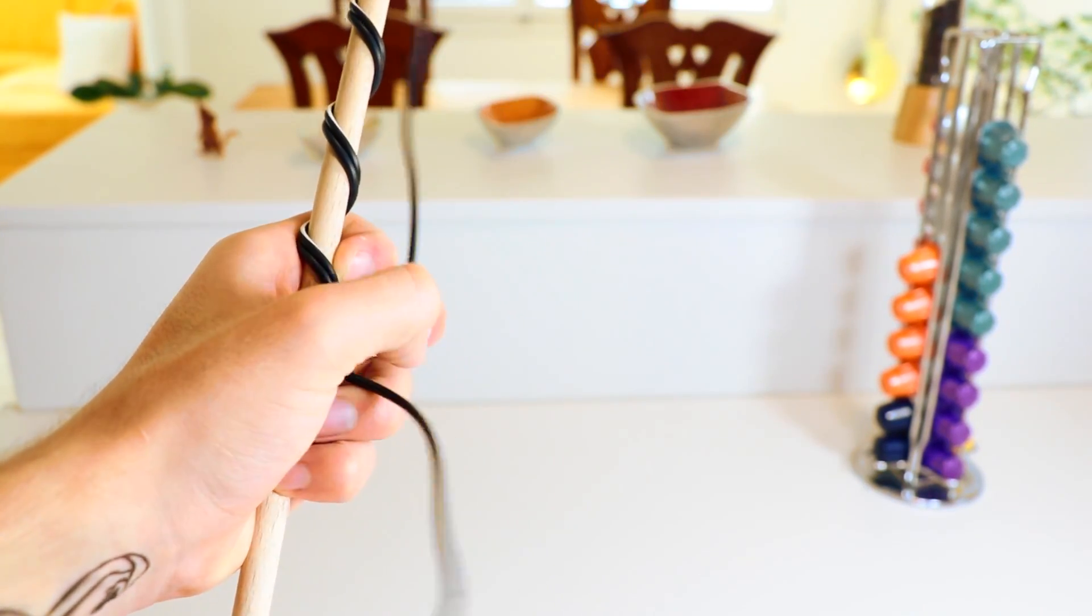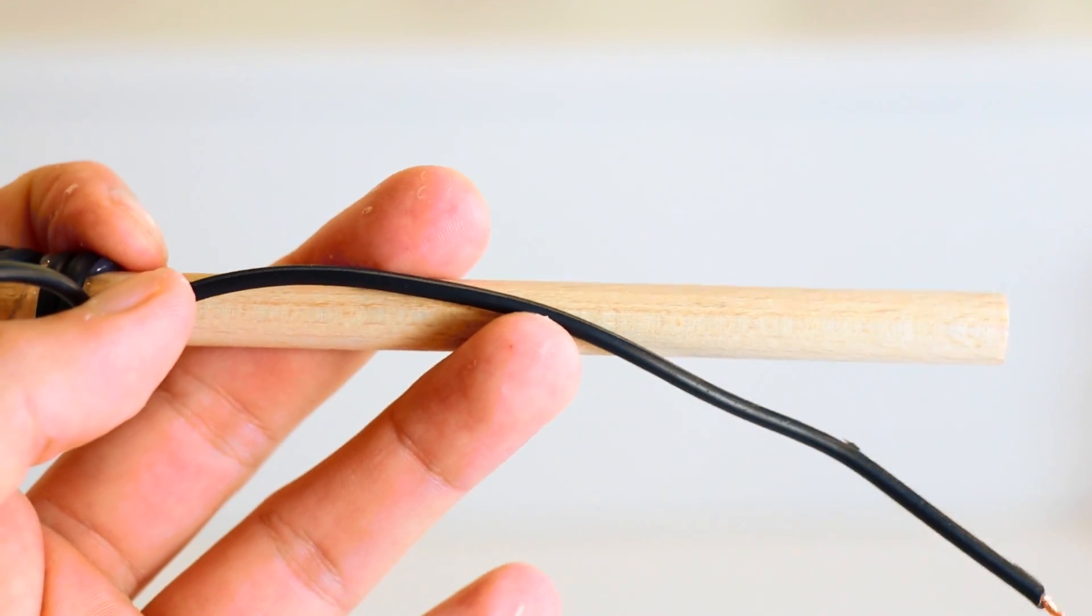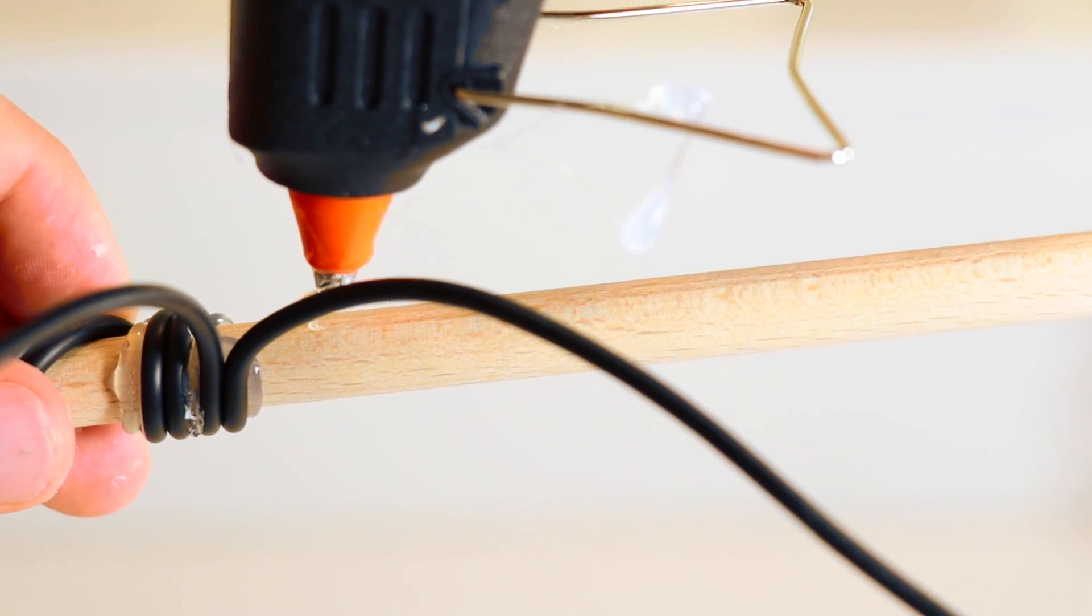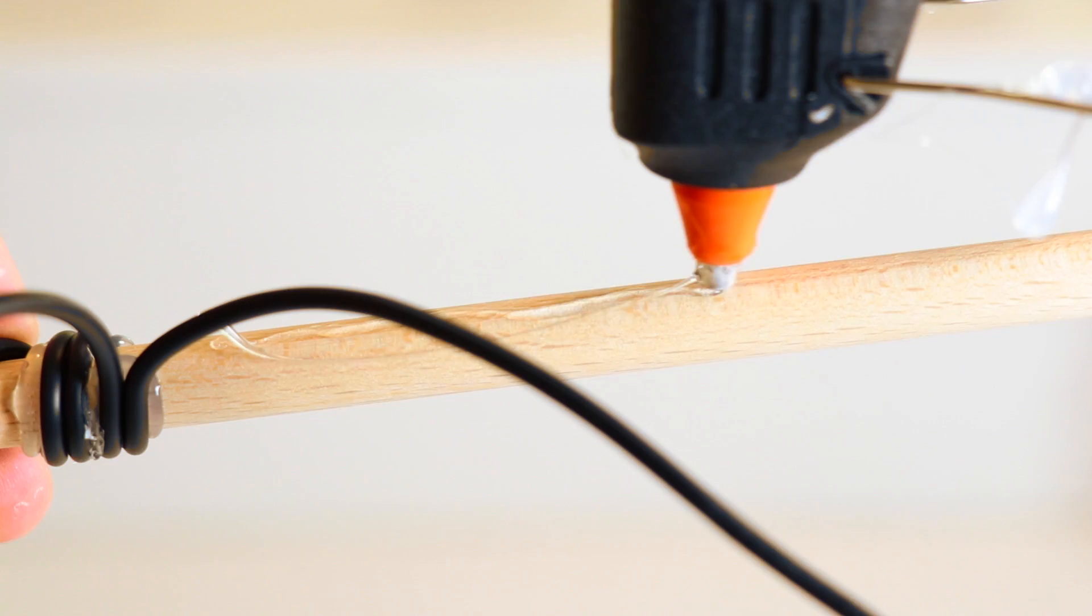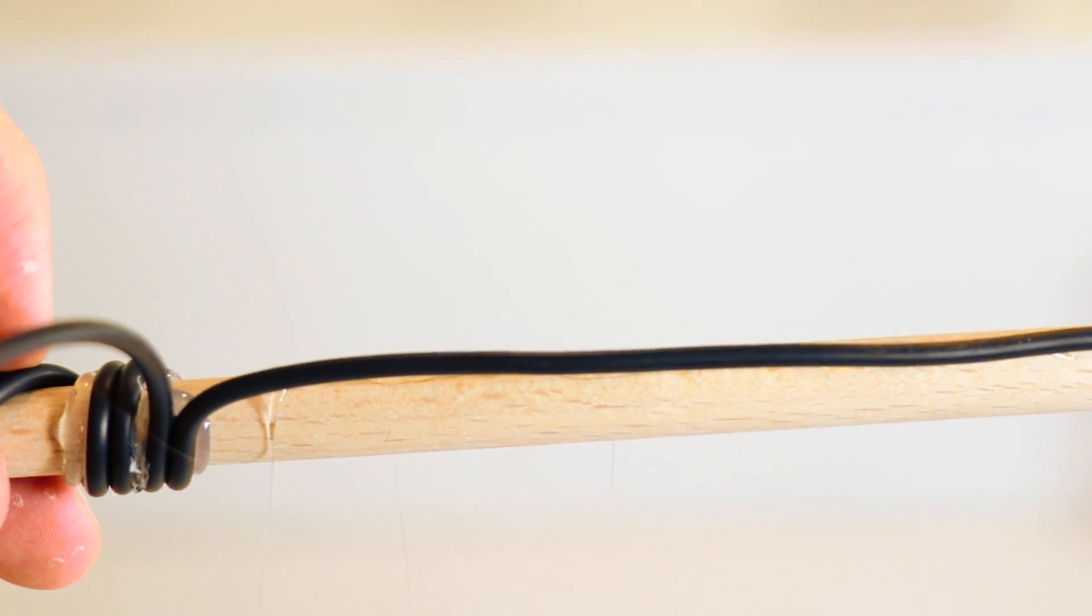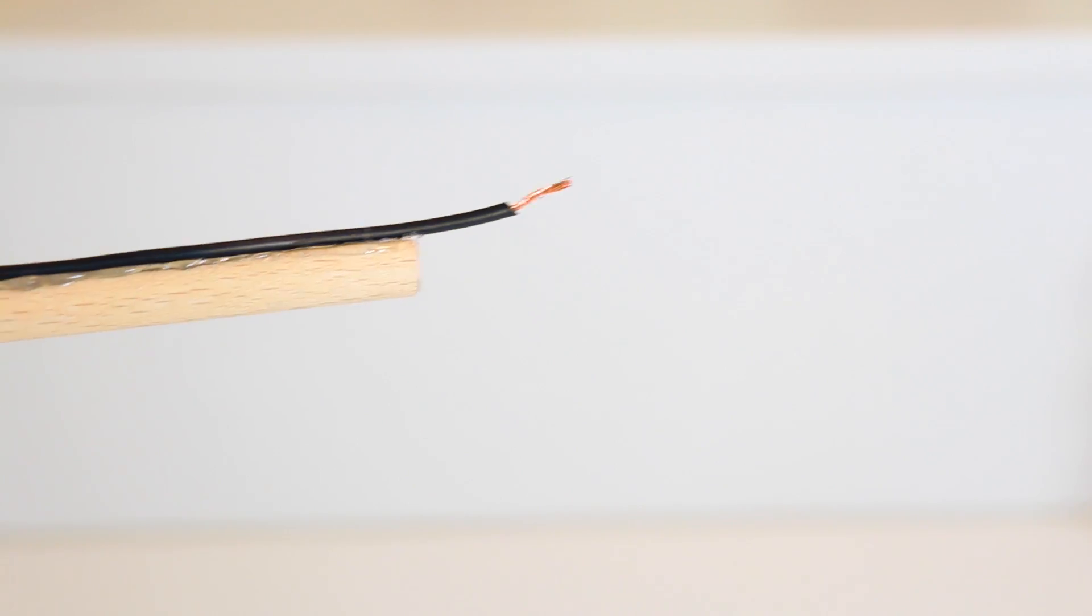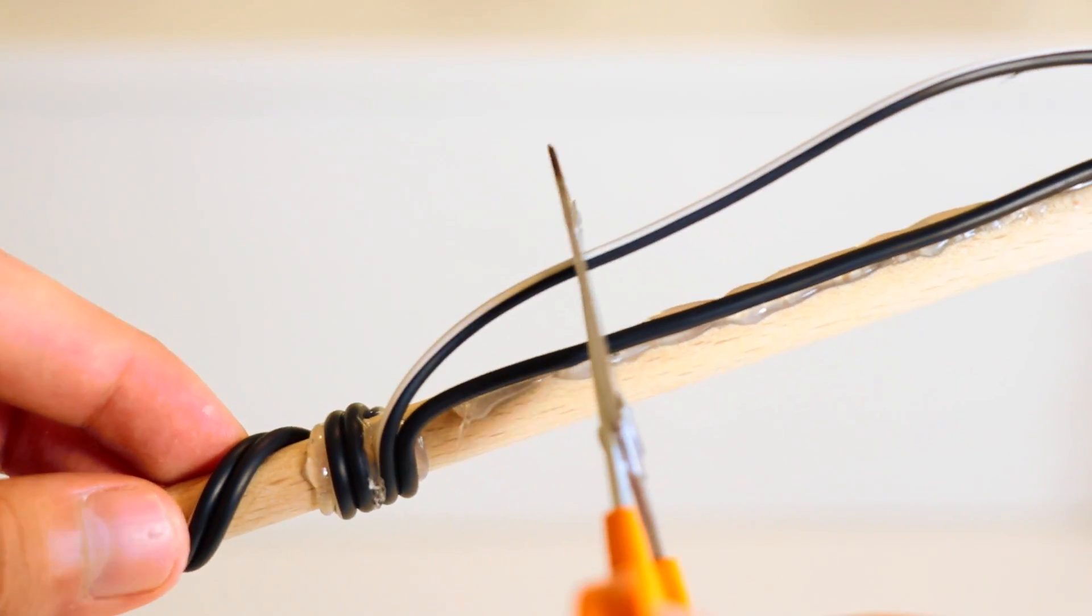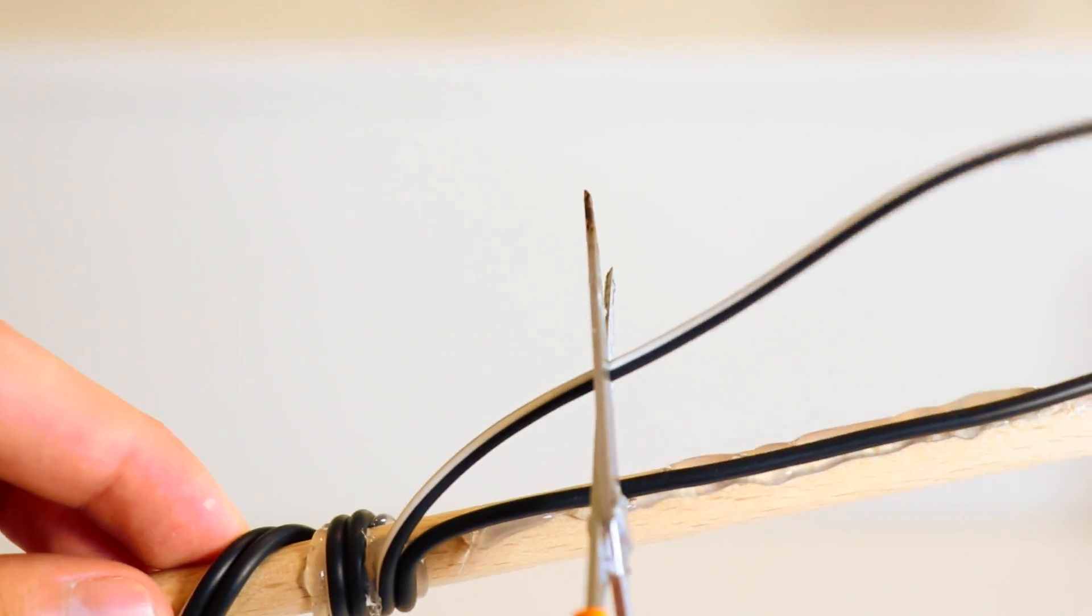Now split the ends completely and secure one wire to the dowel using a line of hot glue. Then cut the other wire at about one quarter.